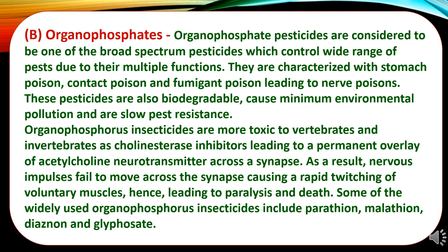The second chemical composition group is organophosphates. Organophosphate pesticides are considered broad spectrum pesticides that control a wide range of pests due to their multiple functions. They are characterized as stomach poisons, contact poisons and fumigant poisons, all leading to nervous system poisoning. These pesticides are also biodegradable, cause minimum environmental pollution and show slow pest resistance development. Organophosphorus insecticides are more toxic to vertebrates and invertebrates as cholinesterase inhibitors, leading to a permanent overlay of acetylcholine neurotransmitter across a synapse. As a result, nervous impulses fail to move across the synapse, causing rapid twitching of voluntary muscles, hence leading to paralysis and death. Widely used organophosphorus pesticides include parathion, malathion, diazinon and glyphosate.